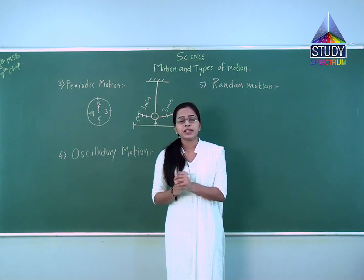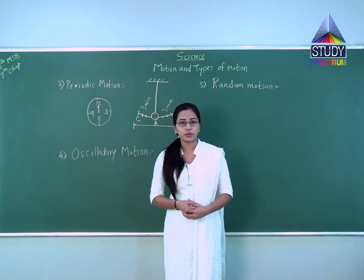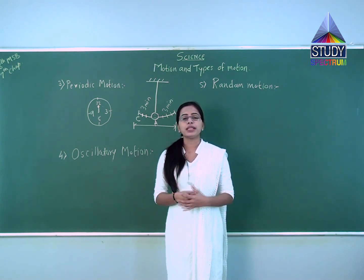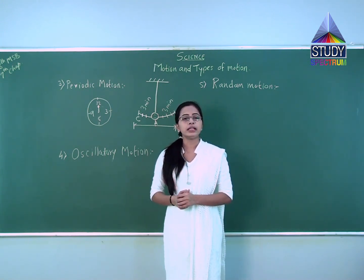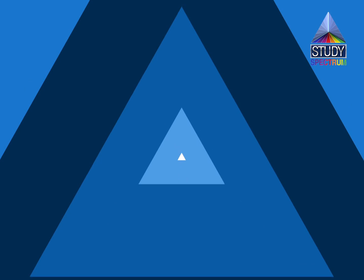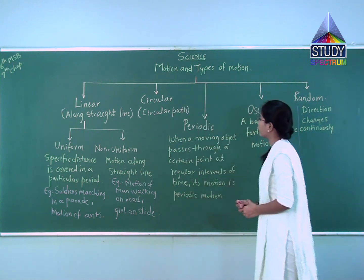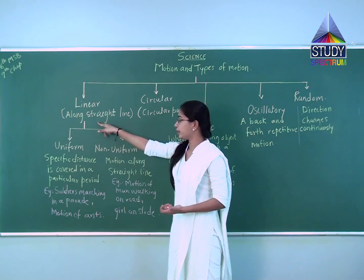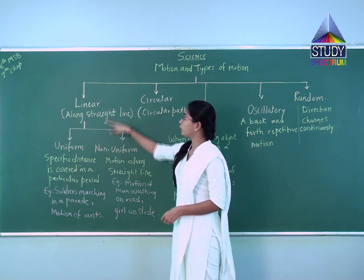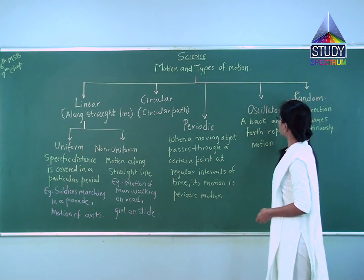In this way, we have a total of five kinds of motion: linear motion, circular motion, periodic motion, oscillatory motion, and random motion. These are the different types of motion. Now let us summarize these motions and write down their definitions. For linear motion we have two types: uniform linear motion and non-uniform linear motion, then circular motion, periodic motion, oscillatory motion, and random motion.